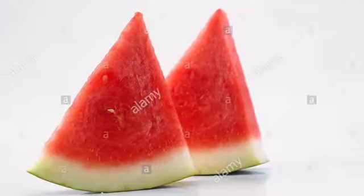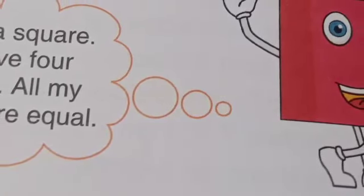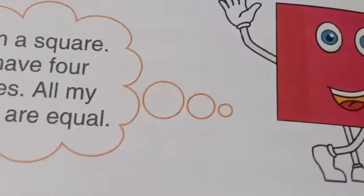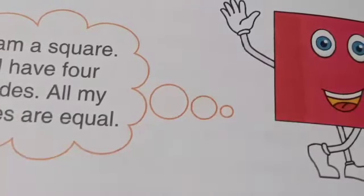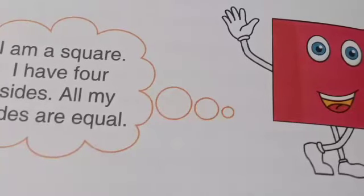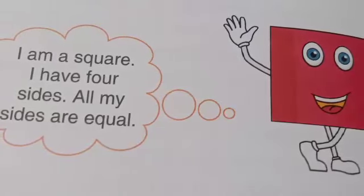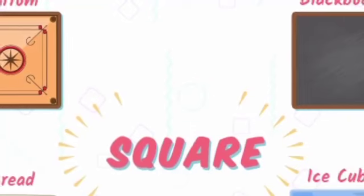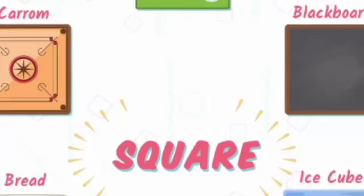The next shape we are going to learn about is a square. You can see it in the picture and in your textbook on page 112. A square has four sides, and all its sides are equal. You can see in the picture that the square has four equal sides.